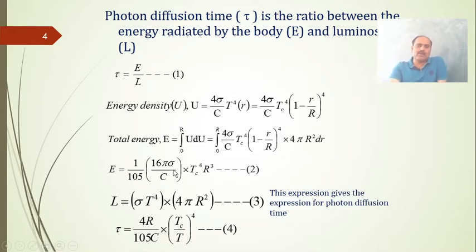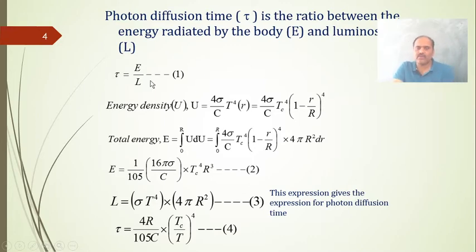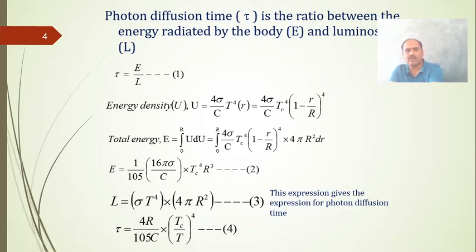Here Tc is the core temperature, σ is Stefan's constant, and r is the radius. Luminosity is defined as energy flux multiplied by surface area. Substituting the energy density expression (equation 2) divided by the luminosity expression (equation 3) gives the photon diffusion time. After simplification, you get: τ = (4R / u₀₅c) × (Tc / T₄)⁴, which is the photon diffusion time of a star.